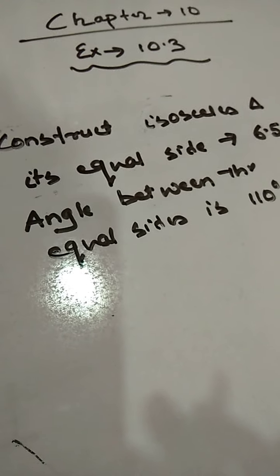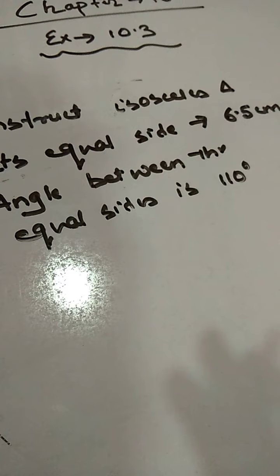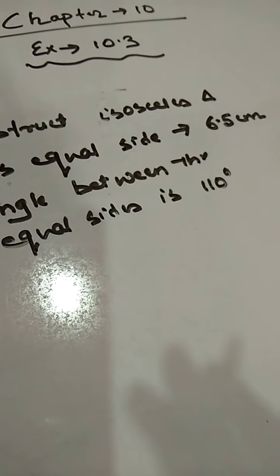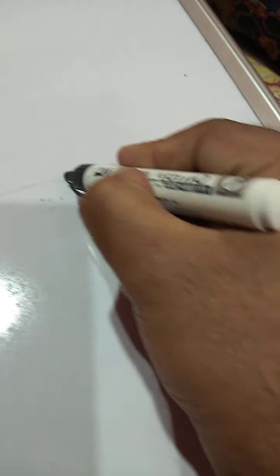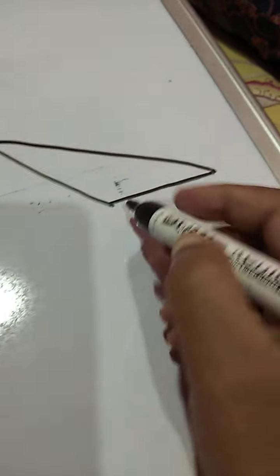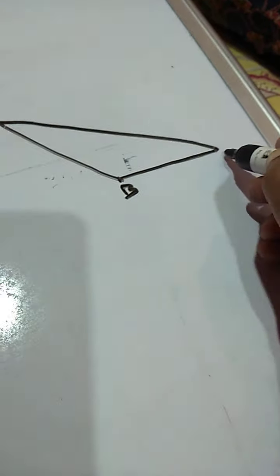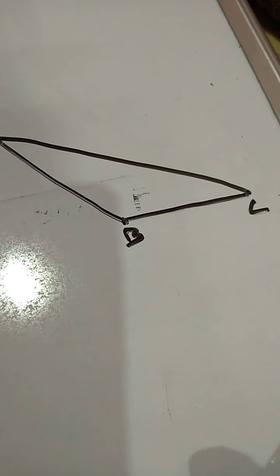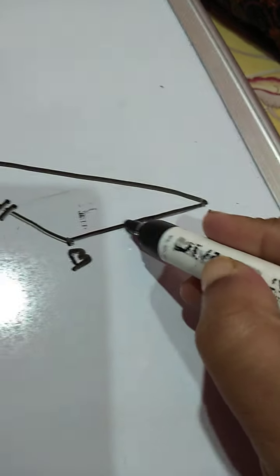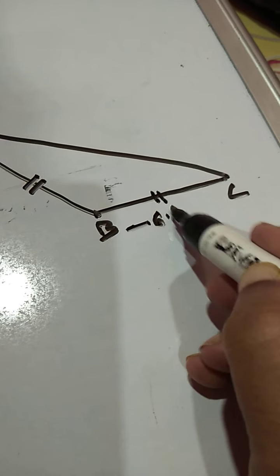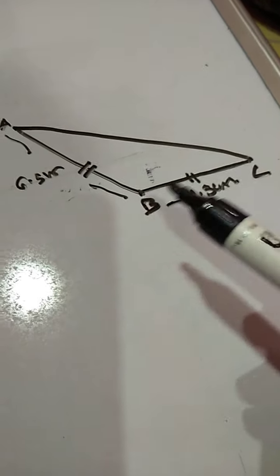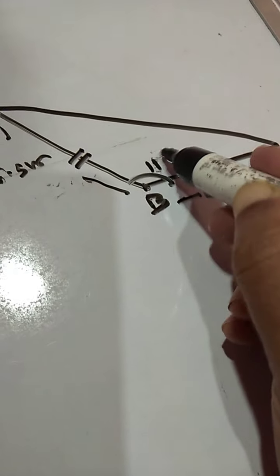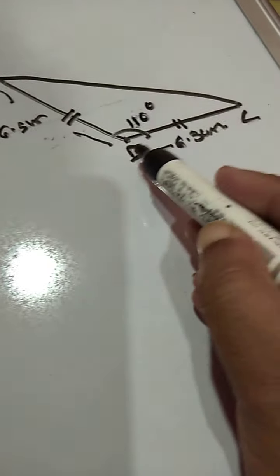In question number 2, we have to construct an isosceles triangle. No specific name is given; they have just said to construct an isosceles triangle where each equal side measures 6.5 cm and the angle between the equal sides is 110 degrees. The rough sketch will look like this since it is 110 degrees. We will name the triangle as ABC, and since it is an isosceles triangle, the two equal sides will each be 6.5 cm. The angle between the two equal sides is 110 degrees.